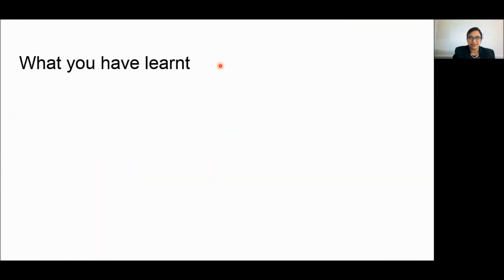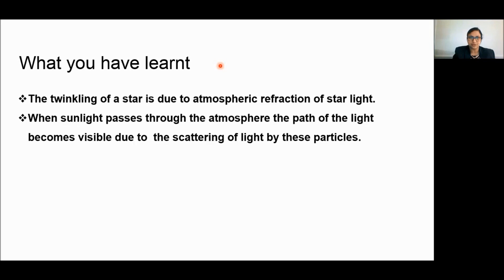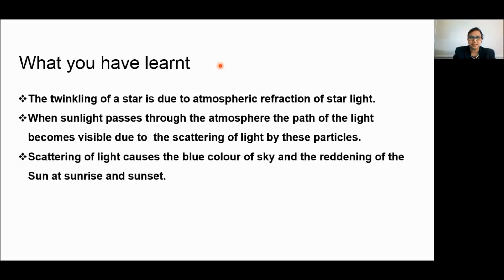What have you learned? The twinkling of a star is due to the atmospheric refraction of starlight. When sunlight passes through the atmosphere, the path of the light becomes visible due to the scattering of light by these particles. Scattering of light causes the blue color of sky and the reddening of the sun at sunrise and sunset.